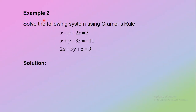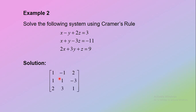Now look at Example 2. Solve the following system using Cramer's rule. Here are the three linear equations. First step: write in matrix form AX equals B.